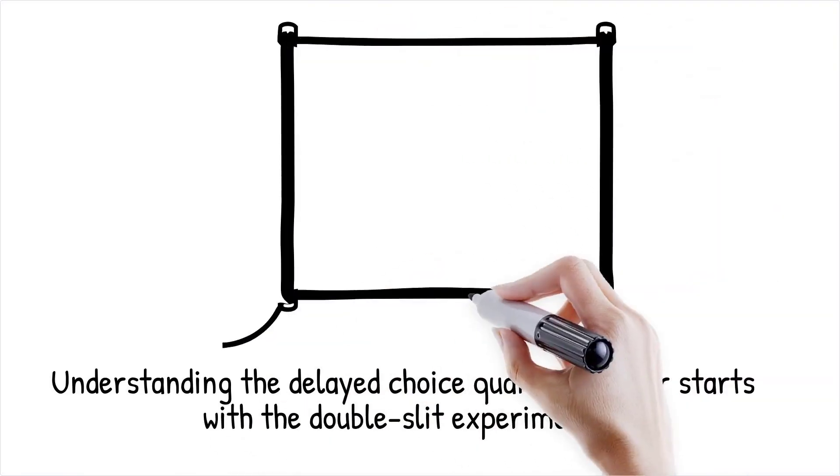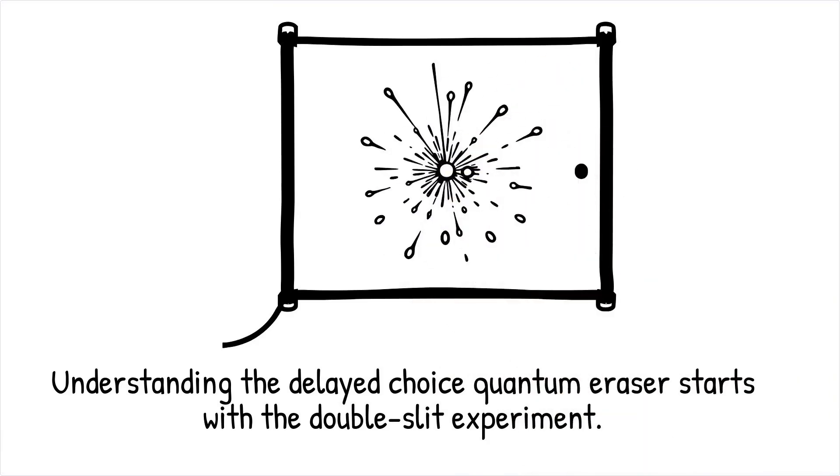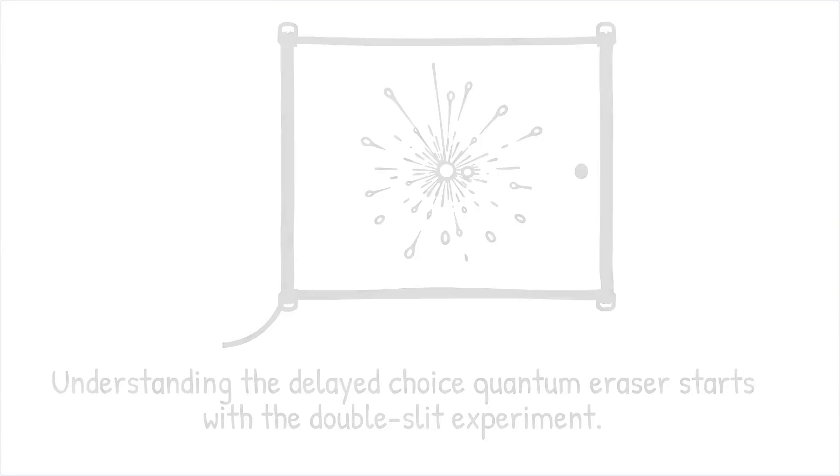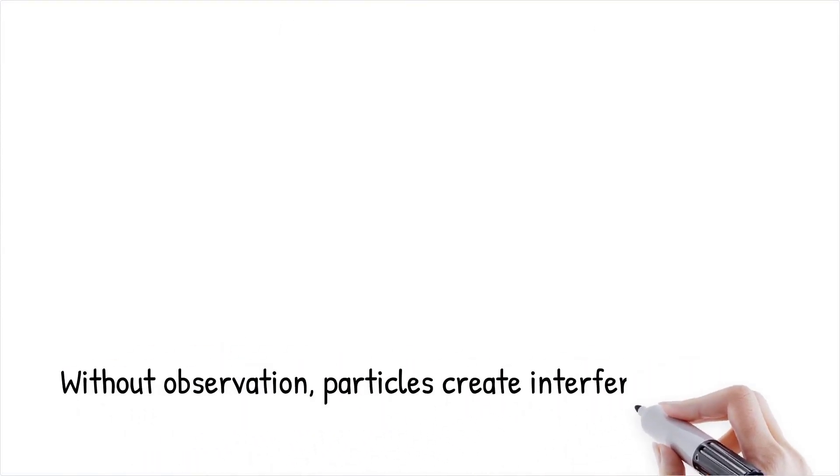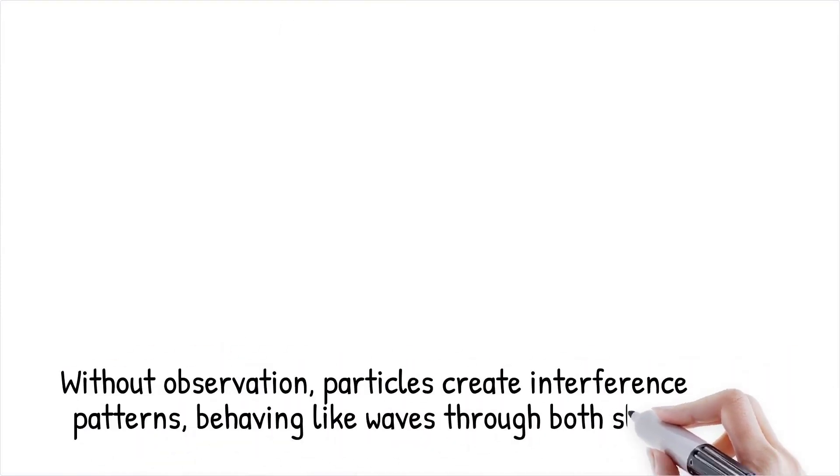To grasp the delayed choice quantum eraser, we must first explore the famous double-slit experiment, which unveiled the dual nature of particles. When electrons or photons are fired at a barrier with two slits, they create an interference pattern on the screen behind, suggesting they behave like waves, passing through both slits simultaneously.